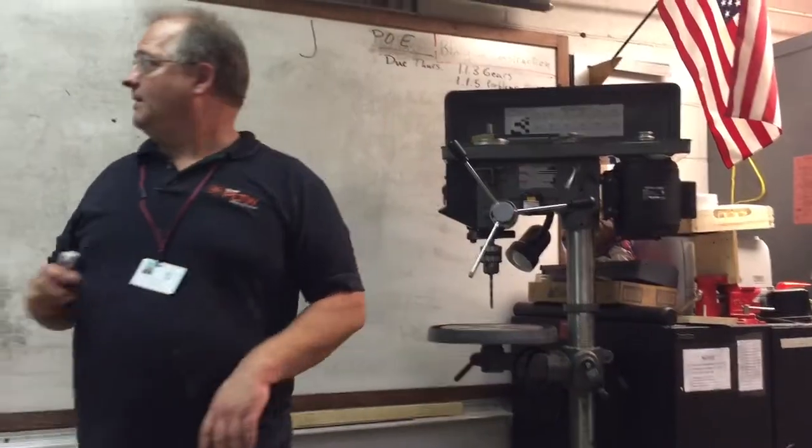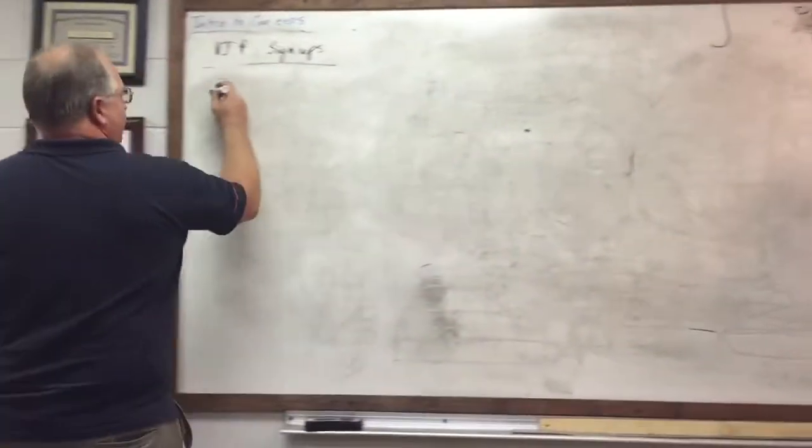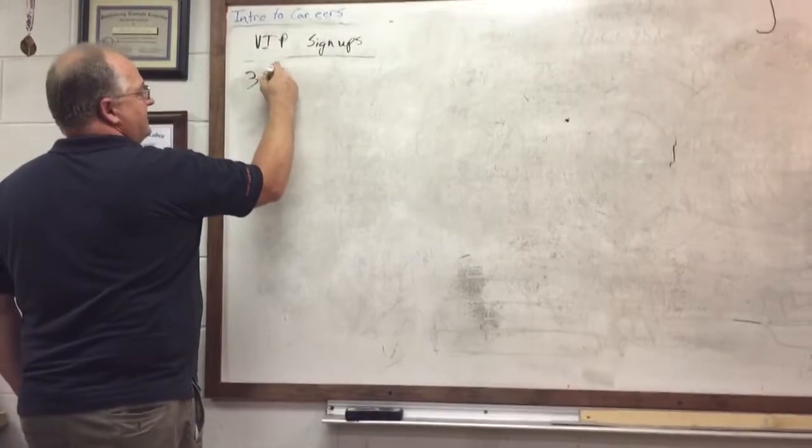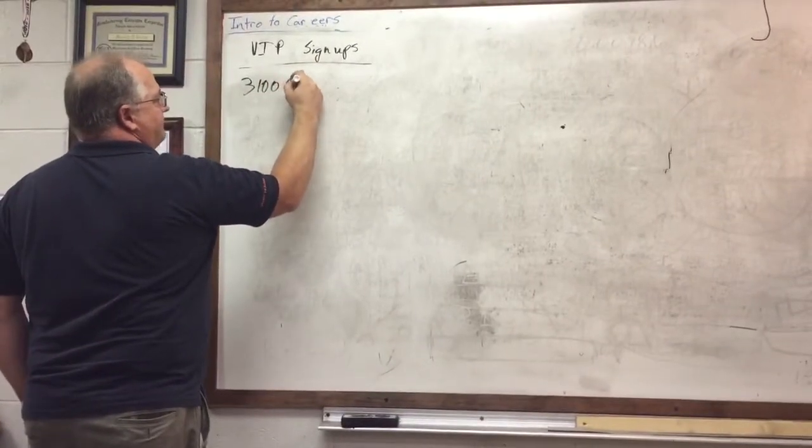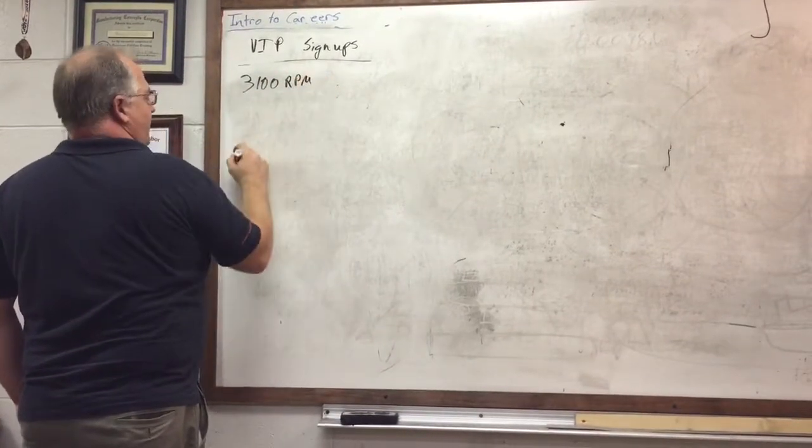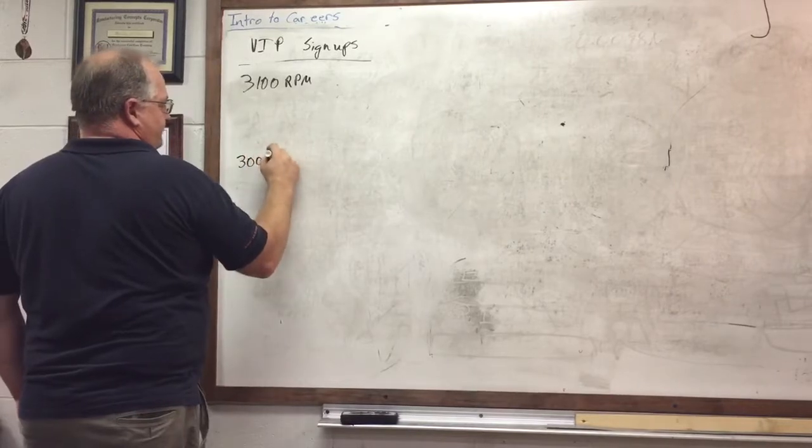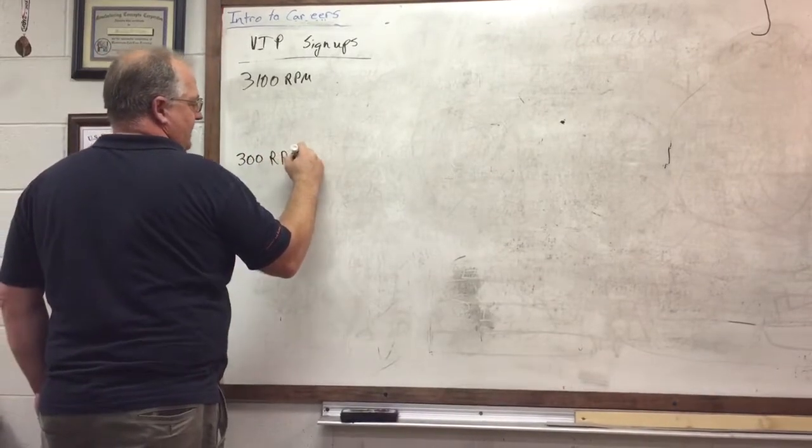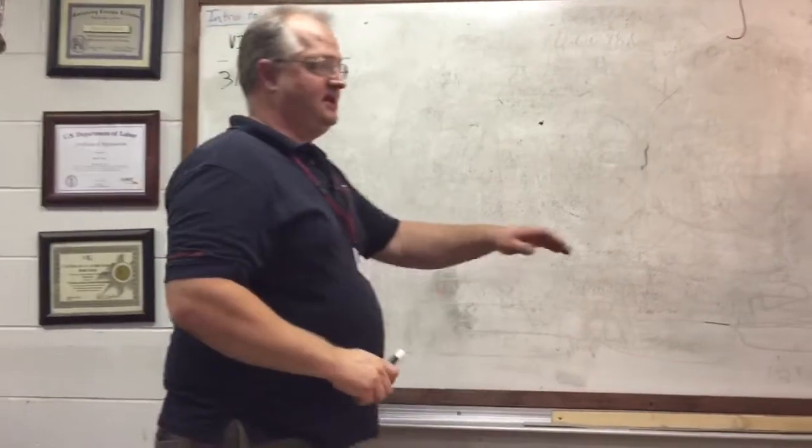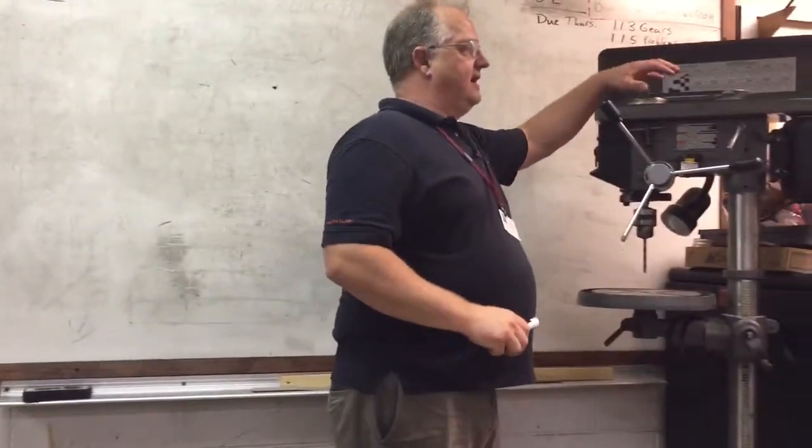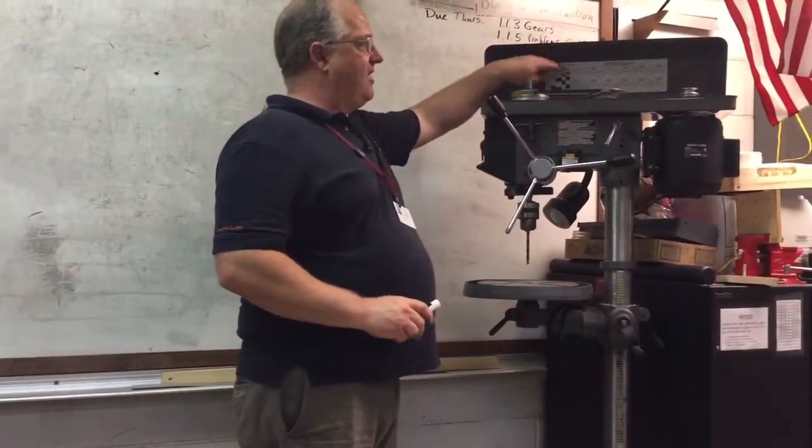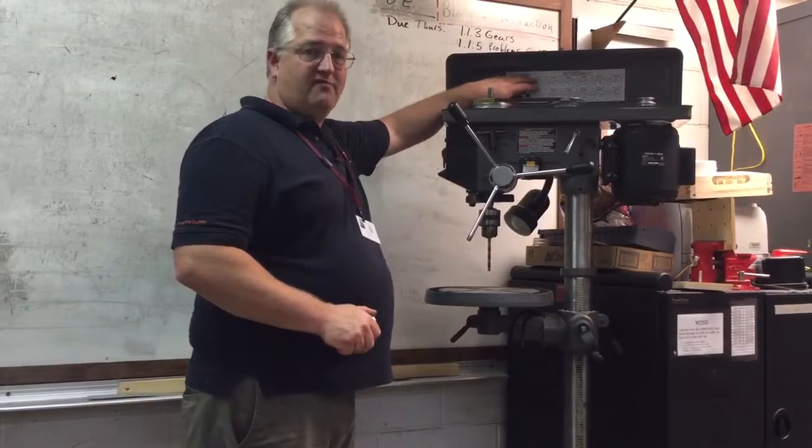The RPM we can achieve on the high side is 3100 RPM, and on the low side it's 300 RPM. Really, other than positioning the pulleys and the belts on the pulleys, all I know is what those 12 RPMs are.